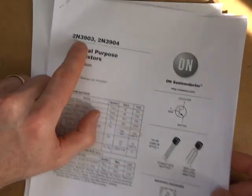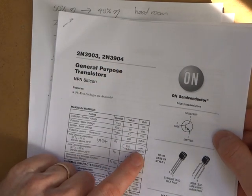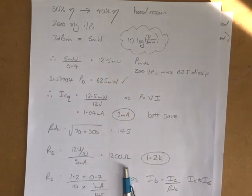Now, according to the spec sheet for the 3904, it's 625 milliwatts is my maximum power dissipation. So that's good. So I'm well within that, so that shouldn't be a problem at all.